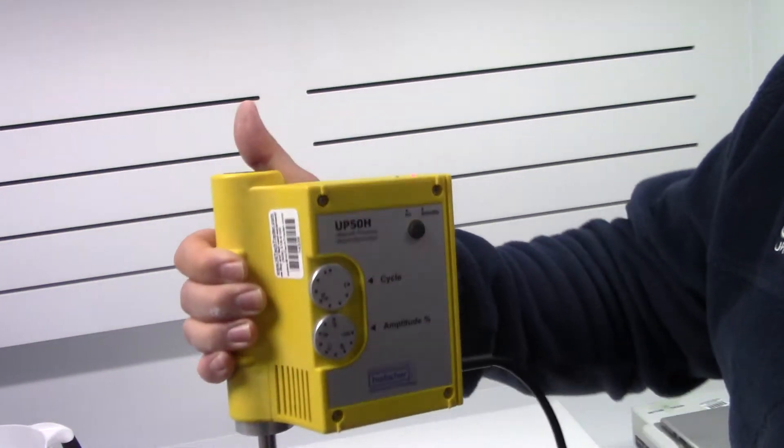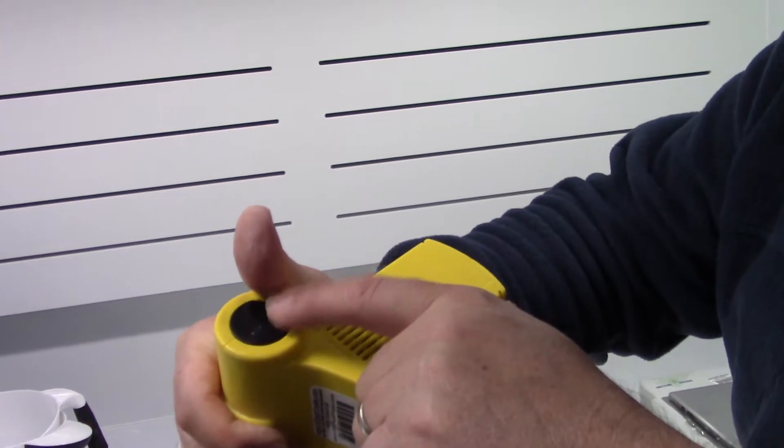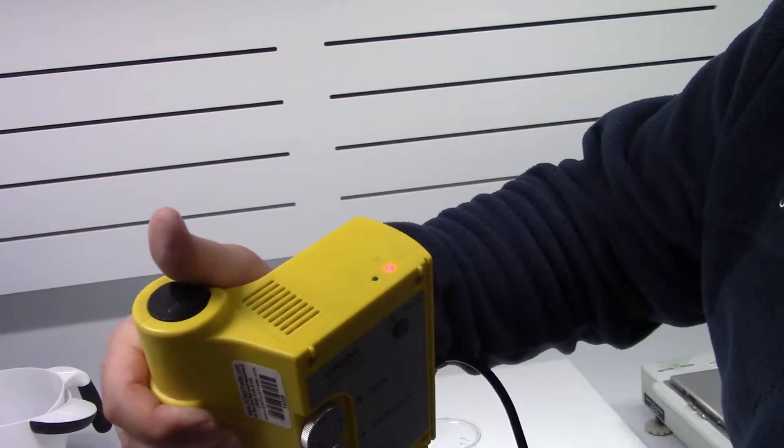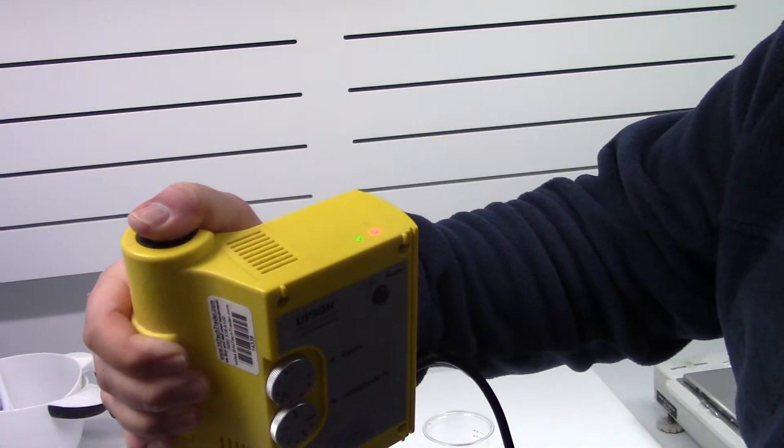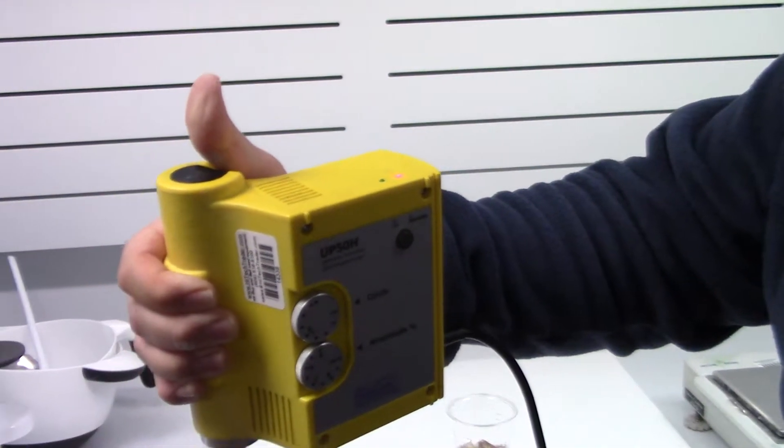A beautiful handheld instrument to start the sonication. You would depress the black button on top, and you'll also see a green light showing the sonicating. When you release it, the sonication goes off.